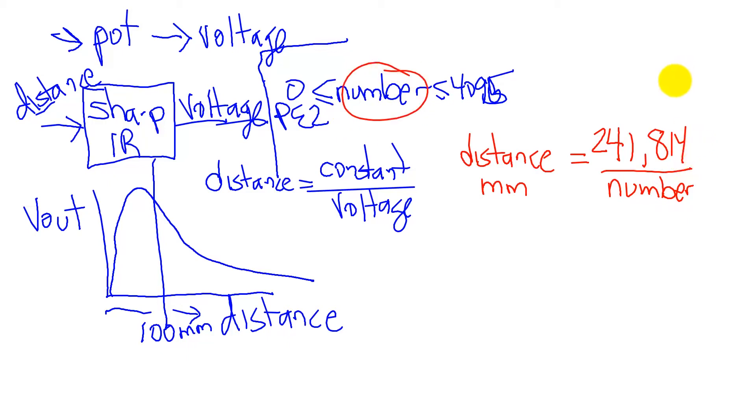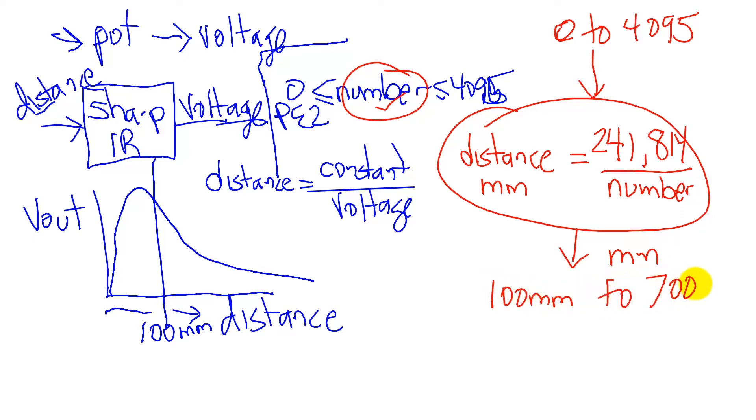So what we have is a software conversion here, which converts the number 0 to 4095, which is measured by the ADC, into a distance in millimeters, which works from about 100 millimeters out to 700 millimeters.